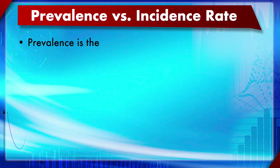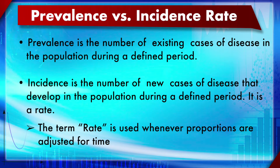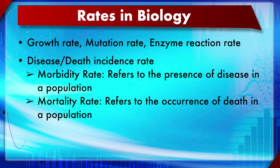Prevalence is the number of existing cases of the disease in the population during a defined period and indicates how widespread a disease is geographically. Incidence rate is the number of new cases that develop during a defined period of time - the time element is what makes it a 'rate.' In biology, several rates are used: growth rate, mutation rate, enzyme reaction rate, morbidity rate (presence of disease), mortality rate (occurrence of death), and birth rate.